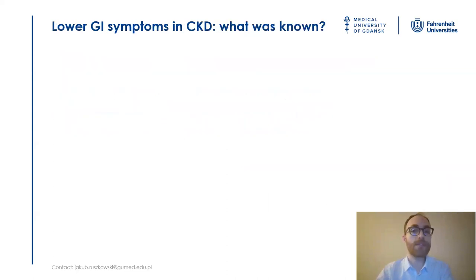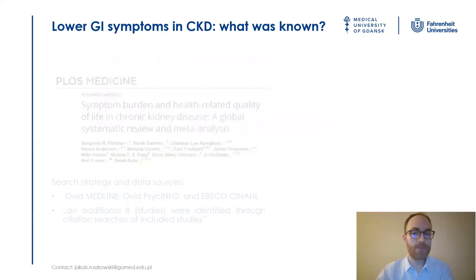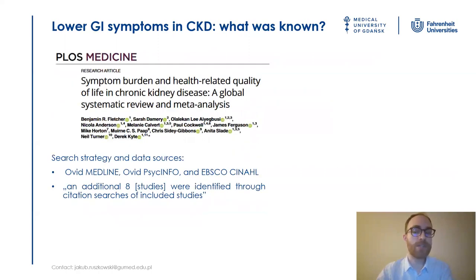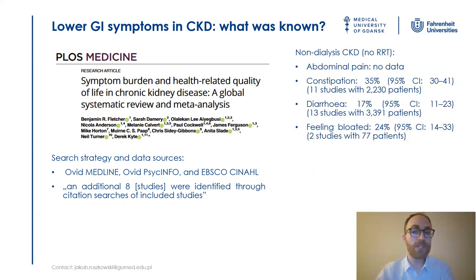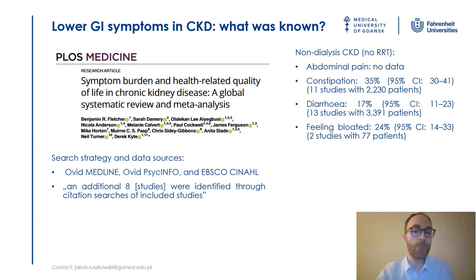The greatest and most up-to-date systematic review from April 2022 was based on a search of free databases and a not very specified citation chasing. They provided meta-analysis on the prevalence of constipation, diarrhea, and bloating, but frankly speaking, the utility of such data was limited because all stages of CKD were merged and analyzed together.